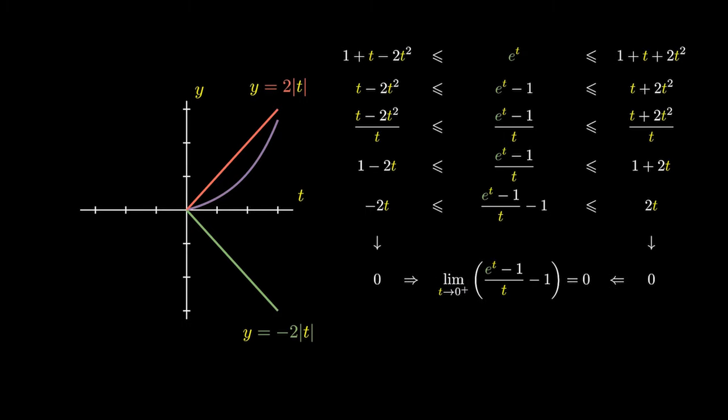In turn, we have the limit of e to the t minus 1 over t equaling 1. A similar argument could be made using slightly different upper and lower functions in order to establish the left-hand limit.